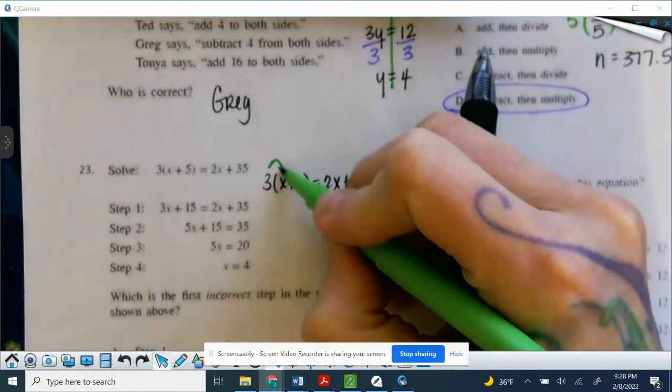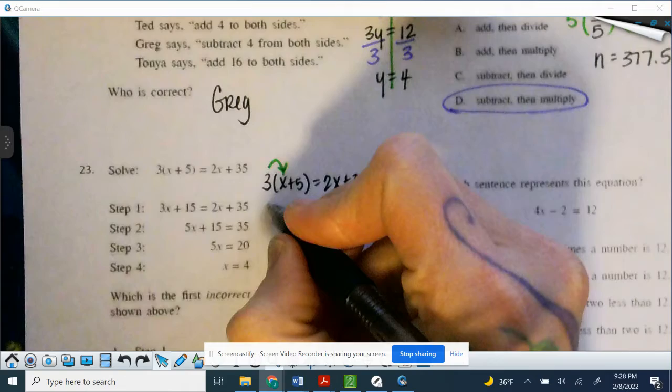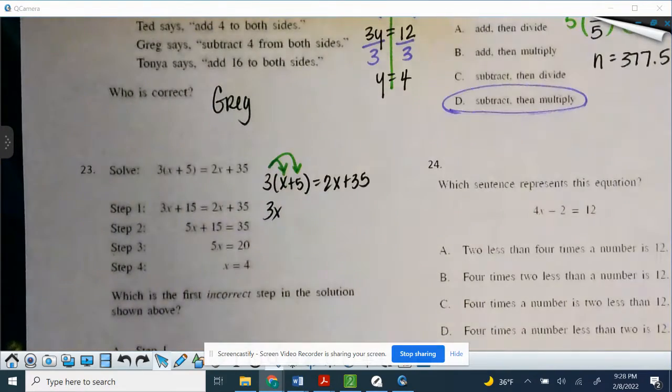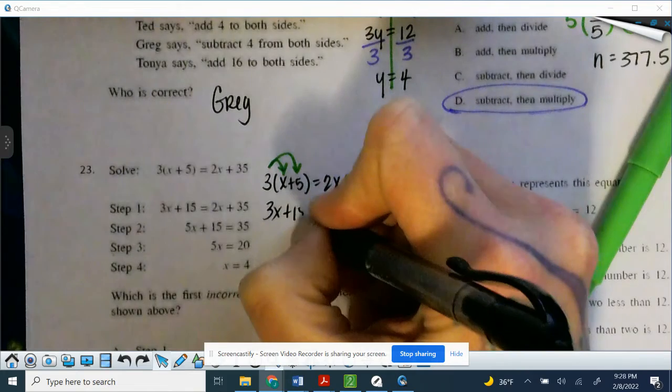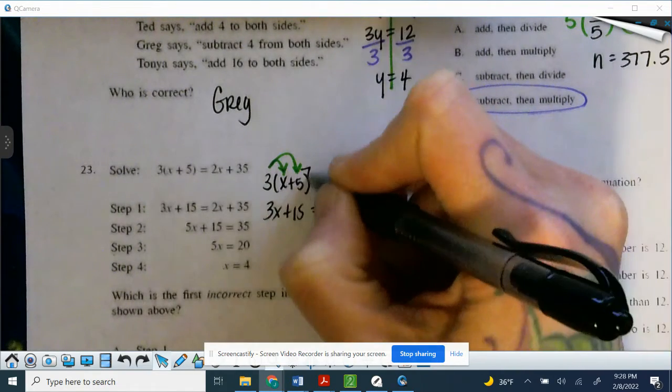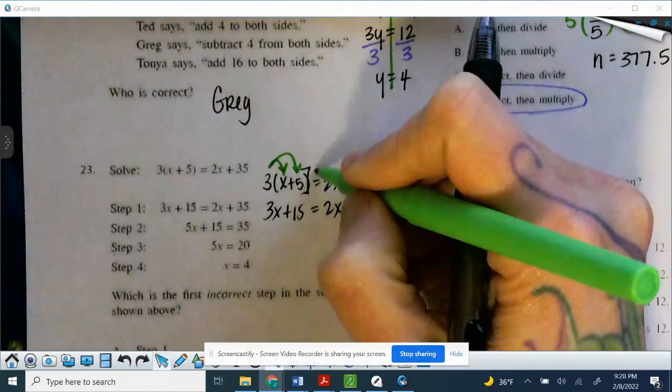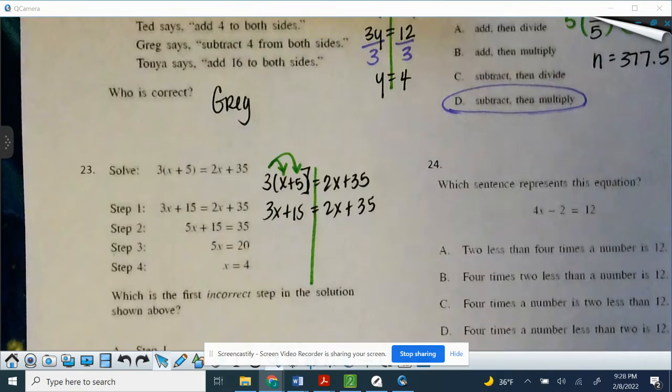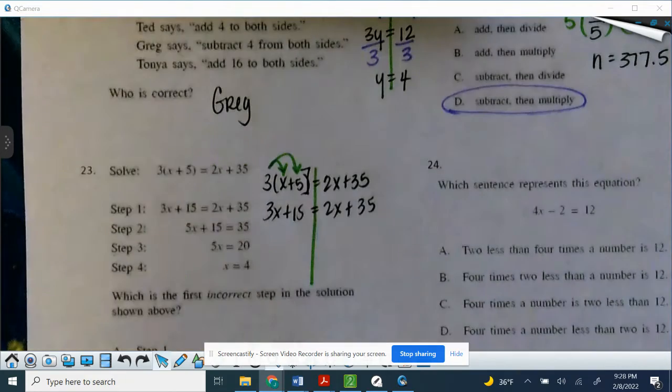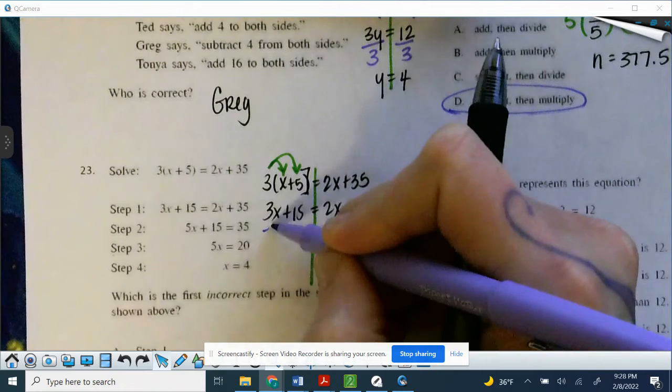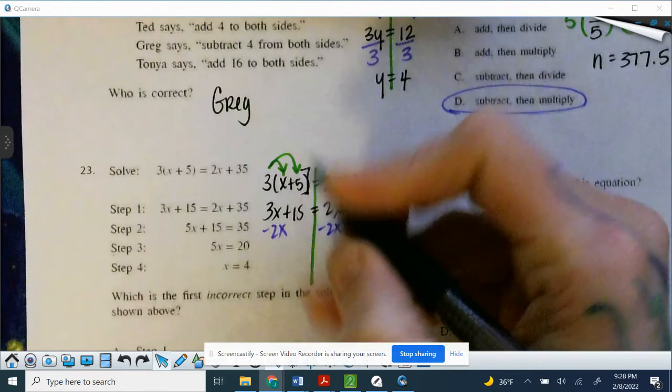So 3 times x, we have 3x, 3 times 5, so plus 15, equals 2x plus 35. And remember, this is that great big brick wall that's going to stop us. Then we have our great divide, we're going to try to get our x's on the same side. I like to work towards the bigger x, I have 3x's, so I'm going to subtract 2x, subtract 2x, and that leaves me with x plus 15 equals 35.